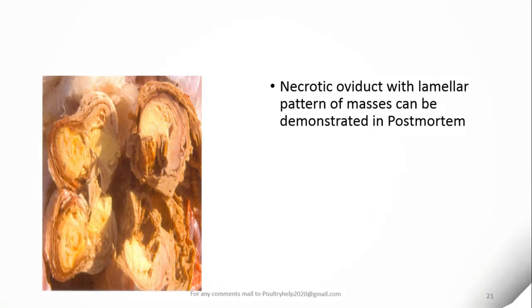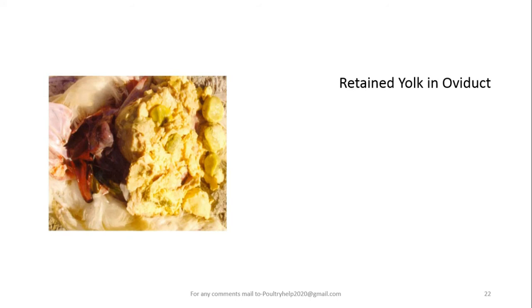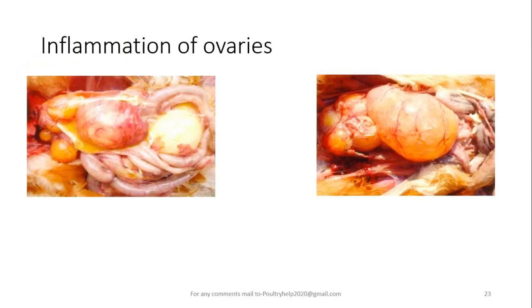In chronic cases, a laminar-like pattern of caseous necrosis can be found in the oviduct. Additionally, retained yolk in the oviduct can be found. Inflammation of the ovaries is characterized by reddening and hyperemic conditions that can be demonstrated easily.